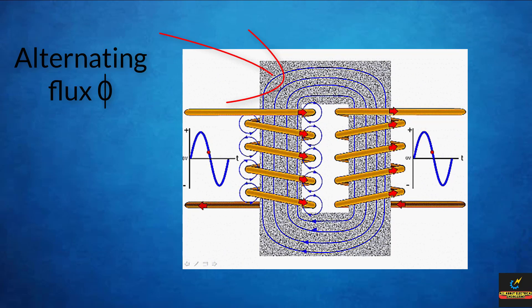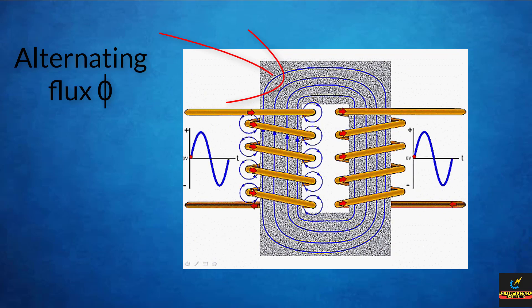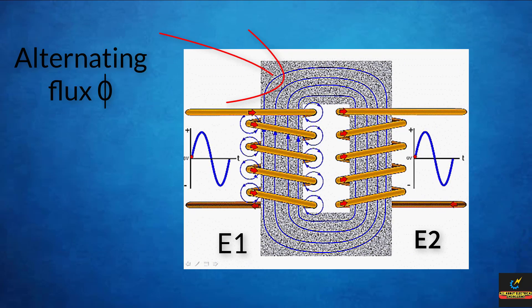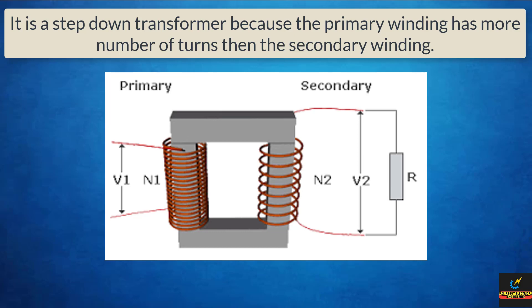These alternating flux links both of the windings and induces an EMF, E1 for primary and E2 for secondary. The EMF is induced according to Faraday's law of electromagnetic induction. The magnitude of E1 and E2 depends upon the number of turns on the primary and secondary winding respectively.